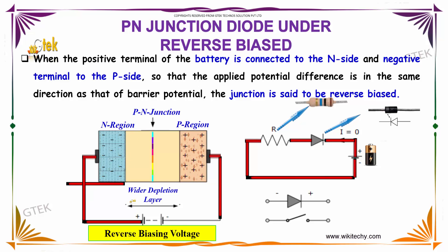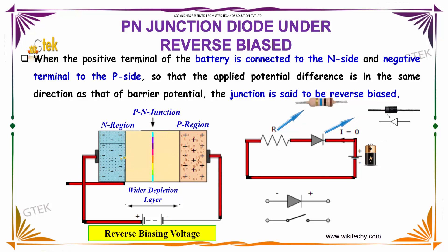When the positive terminal of the battery is connected to the n side and the negative terminal of the battery is connected to the p side, the applied potential difference is in the same direction as that of the barrier potential. Then the junction is called reverse biased.